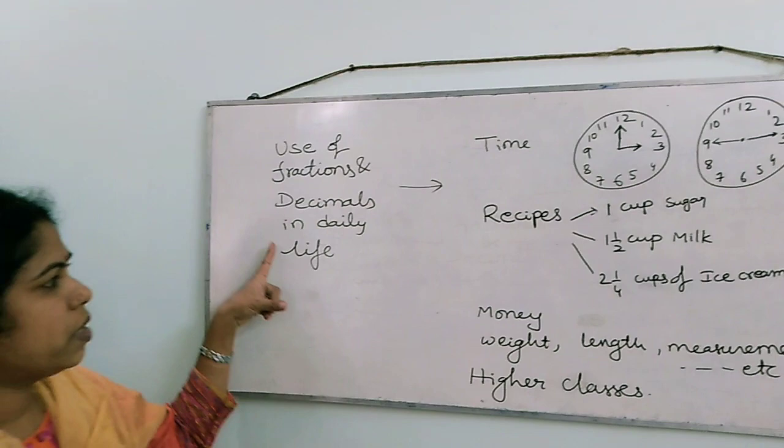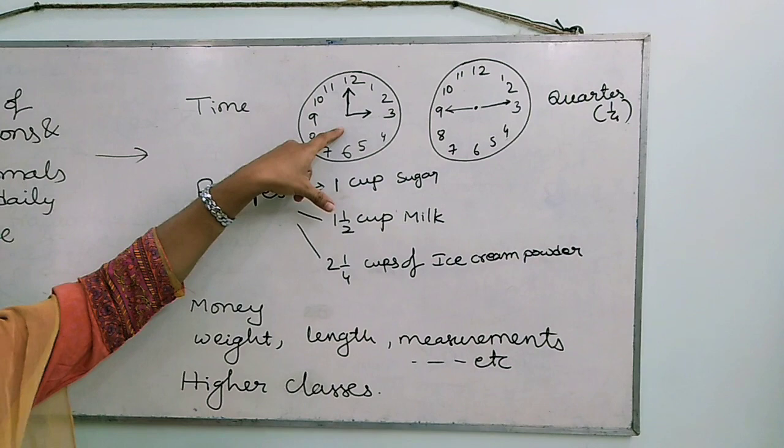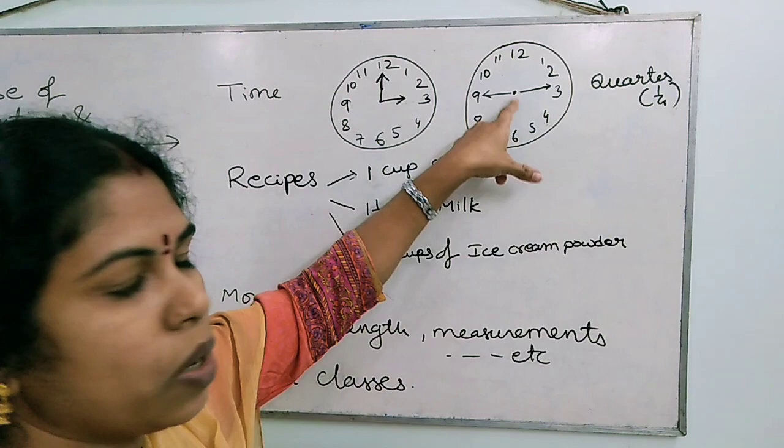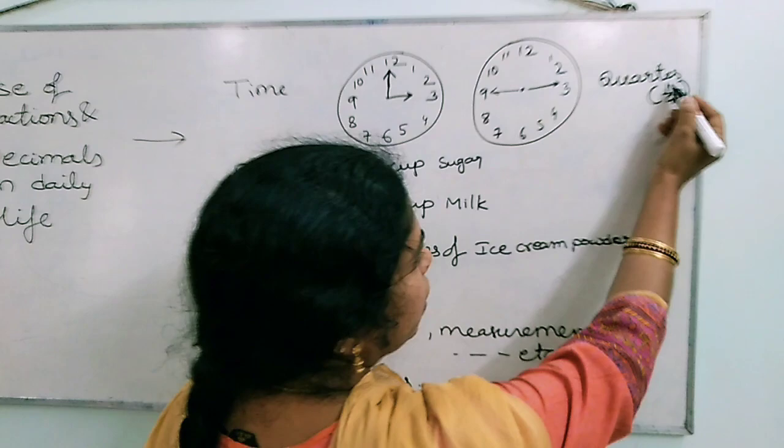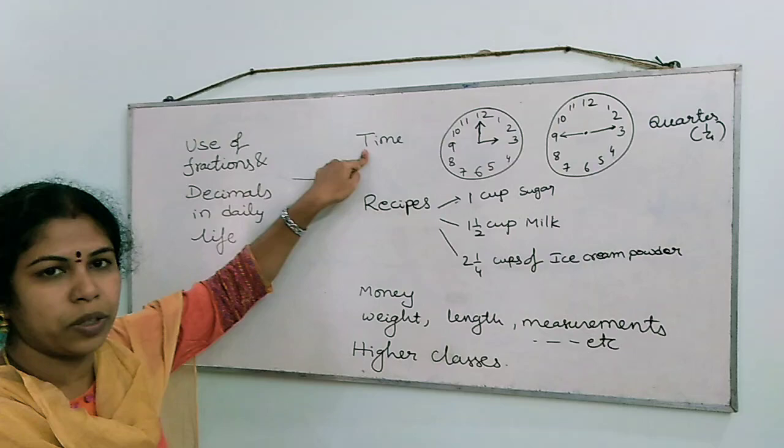See this example. In this clock, what is the time, children? 3 o'clock. In this clock it is 2:45, or you can also say quarter to 3. This quarter is nothing but 1 by 4. So in the case of time also, we are using the fractions concept.